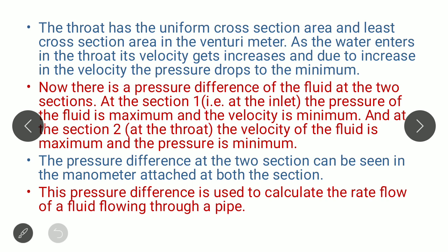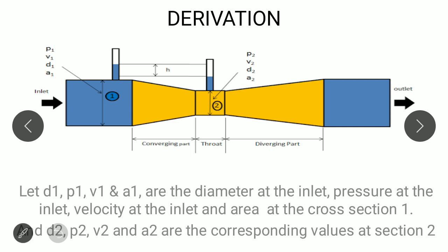The throat has the uniform cross section area and least cross section area in the venturimeter. As the water enters in the throat, its velocity gets increased and due to increase in the velocity, the pressure drops to the minimum. There is a pressure difference of the fluid at two sections. At section 1, at the inlet, the pressure of the fluid is the maximum and the velocity is minimum. And at section 2, that is at the throat, the velocity of fluid is maximum and the pressure is minimum. The pressure difference at the two sections can be seen in the manometer attached at both the sections.